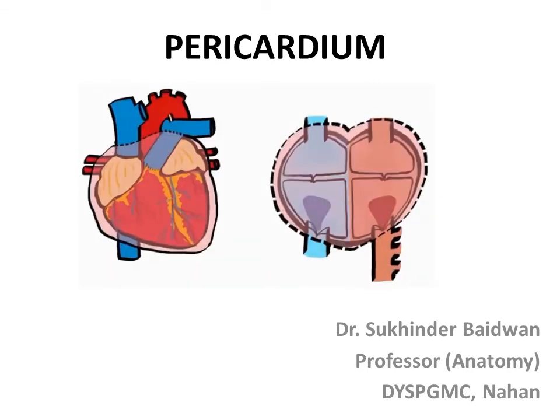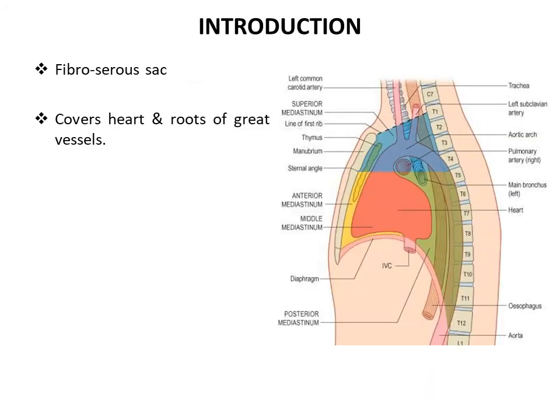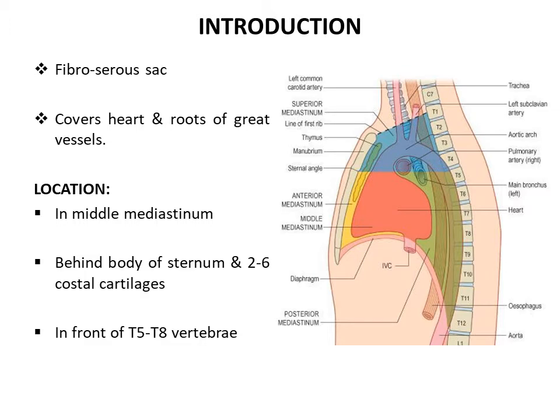Pericardium means 'around the heart.' It is a fibroserous sac which surrounds the heart and the roots of the great vessels which enter or leave the heart. It is located in the middle mediastinum and lies just behind the body of the sternum and the second to sixth costal cartilages. It lies in front of the fifth to eighth thoracic vertebrae.